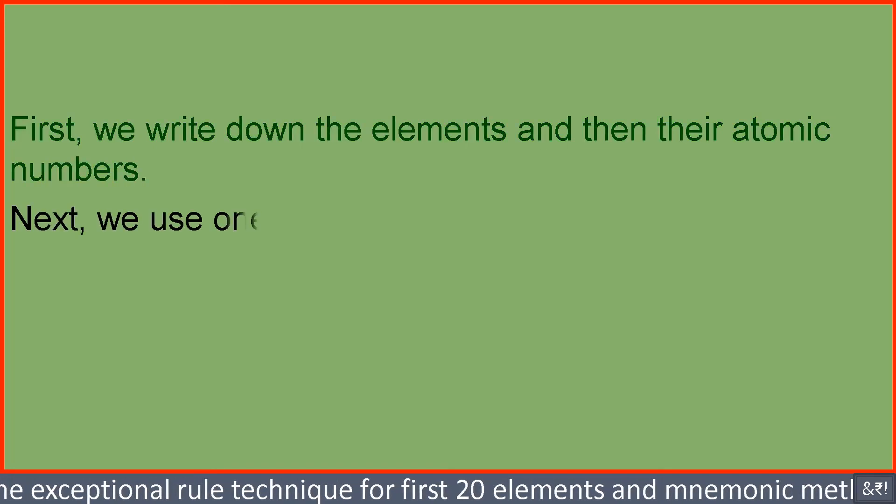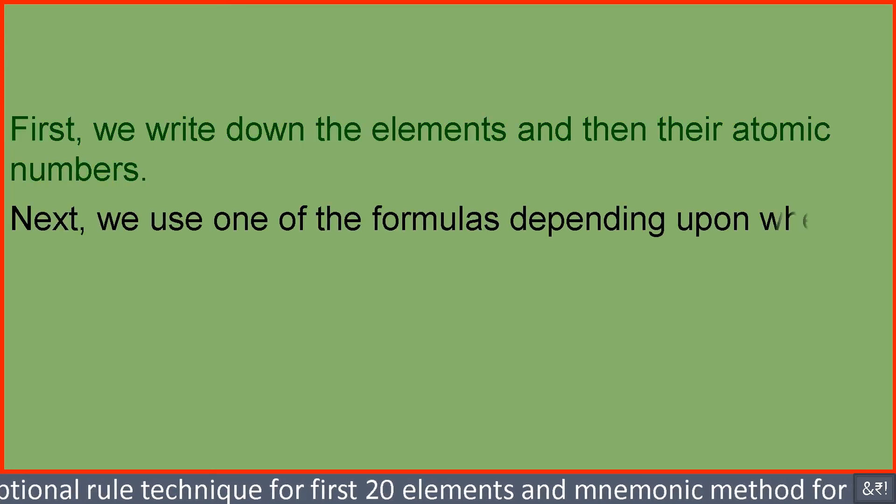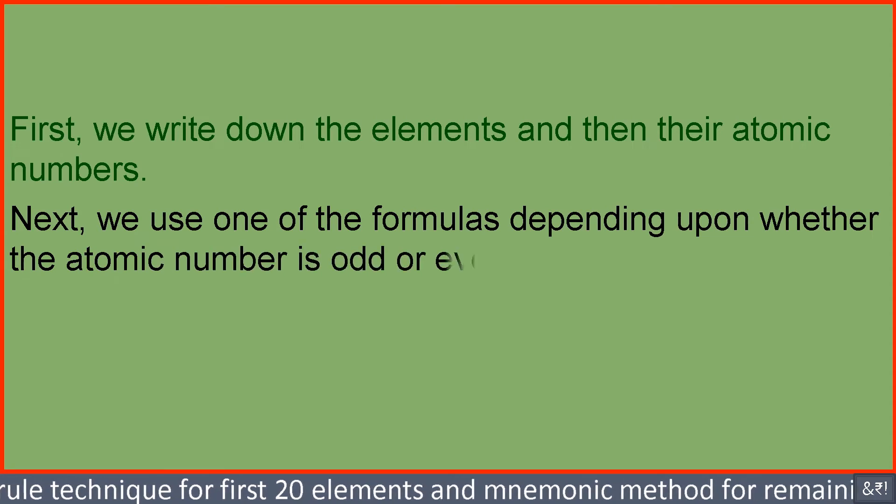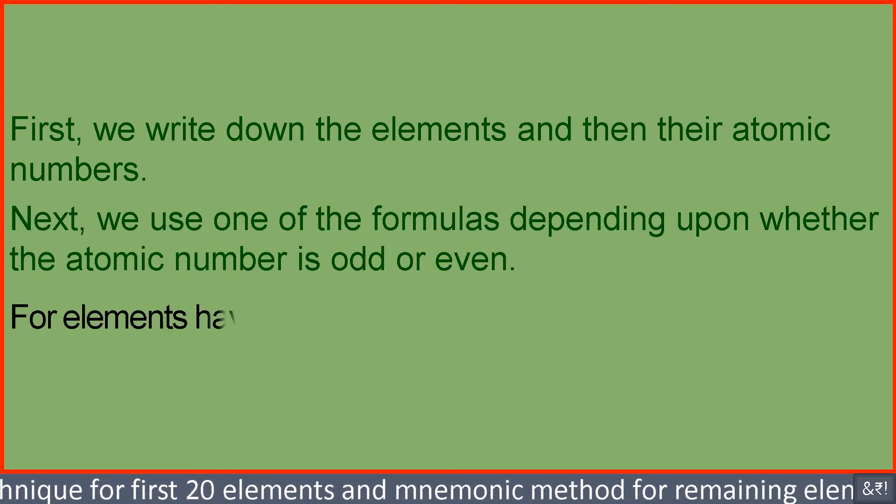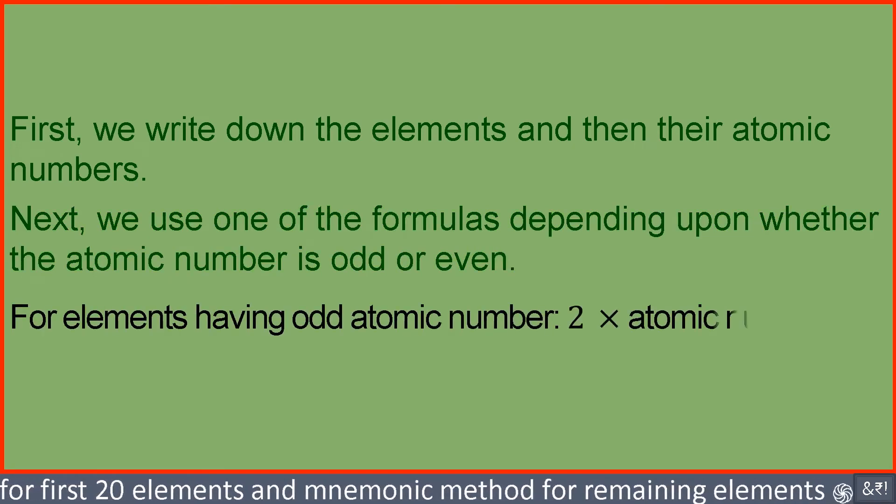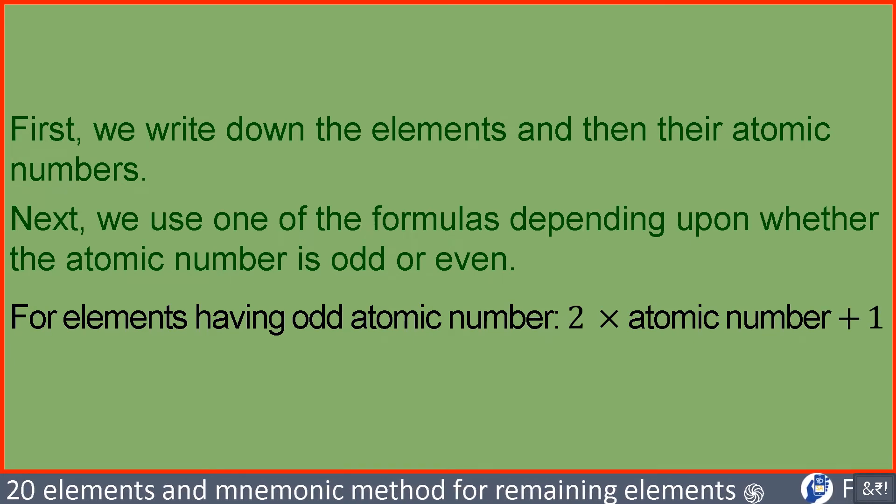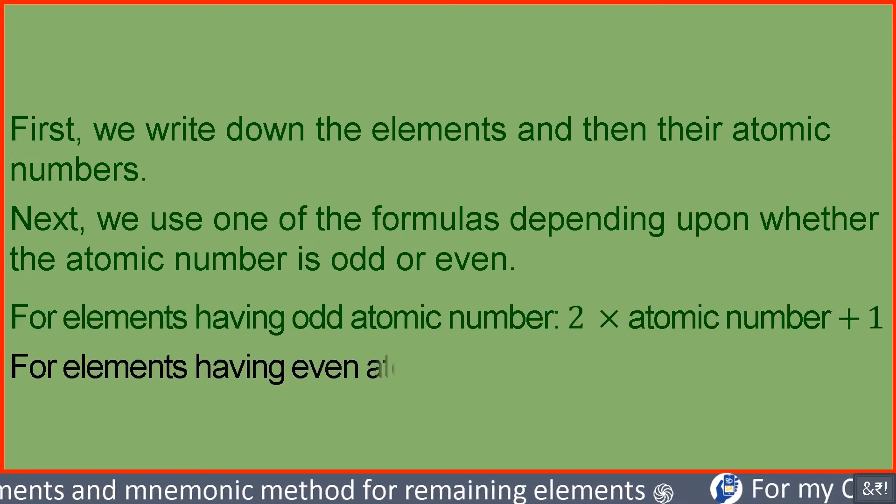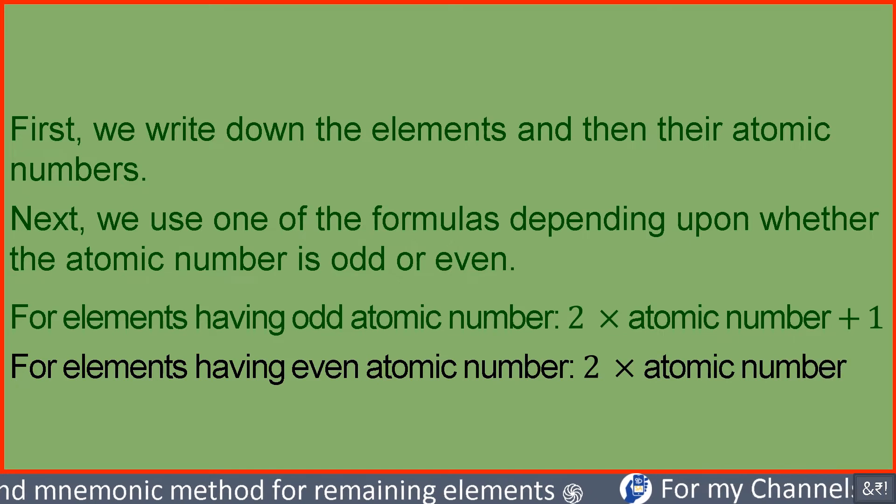Next, we use one of the formulas depending upon whether the atomic number is odd or even. For elements having odd atomic number, 2 multiplied by atomic number plus 1. For elements having even atomic number, 2 multiplied by atomic number.